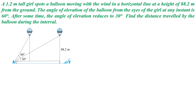Along with the question, a diagram is given. The girl is standing at the point where the angles of elevation are measured. The height of the girl in this question is given, whereas the total height of the balloon from the ground level is 88.2 meters. We need to find out the total distance travelled by the balloon in that particular interval — basically the distance travelled by the balloon as shown in the figure. Using the same figure, we will draw another diagram to make things clearer.